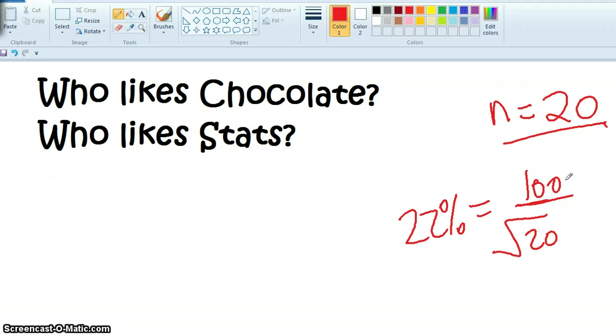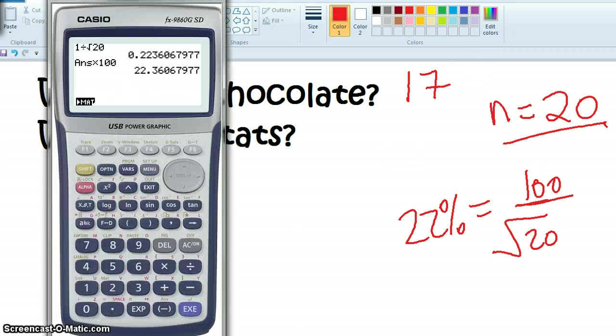Right, who likes chocolate? Hands up. 1, 2, because that's my margin of error. 1, 2, 3, 4, 5, 6, 7, 8, 9, 10, 11, 12, 13, 14, 15, 16, 17. Okay, so what percentage likes chocolate? So we're going to go 17 divided by 20. We've got 85%.